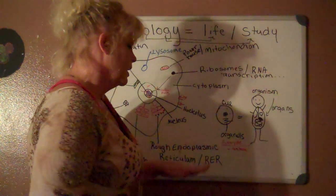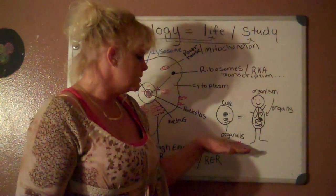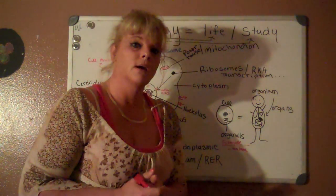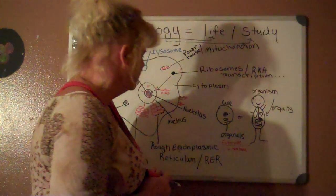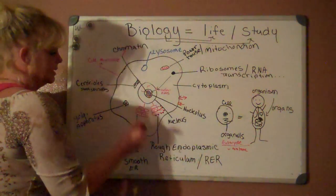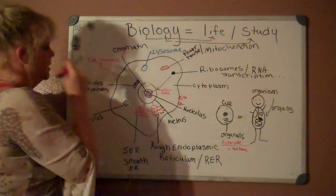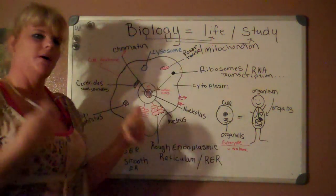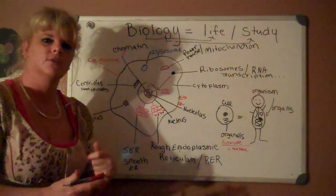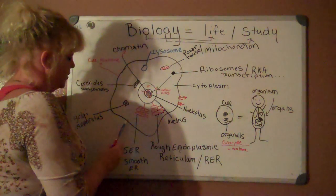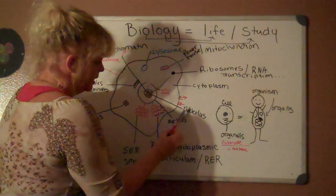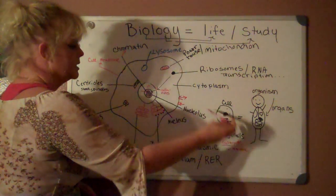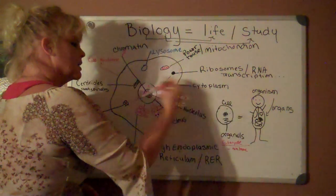A eukaryote — you might want to write that down so it looks familiar when you come across it later. Now, go ahead and draw the outside of the cell first. This outer layer is called the cell membrane — it's like the skin on our bodies. For the cell it's very translucent, and it has little tiny openings that let certain proteins or molecules in and out of its structure.